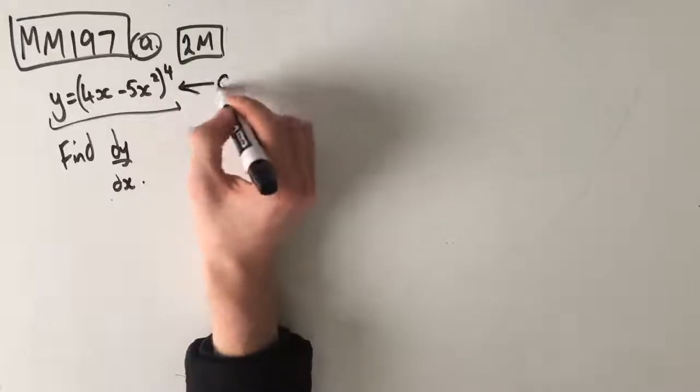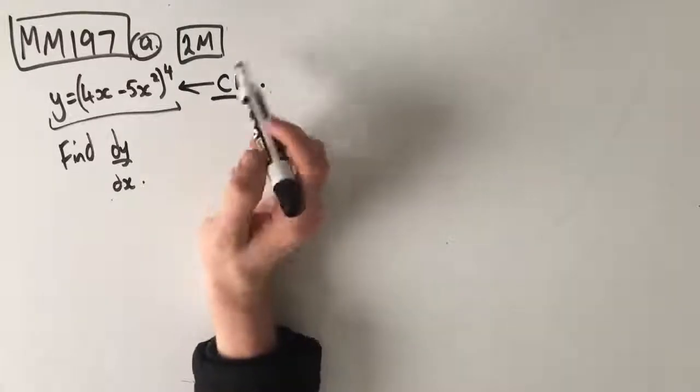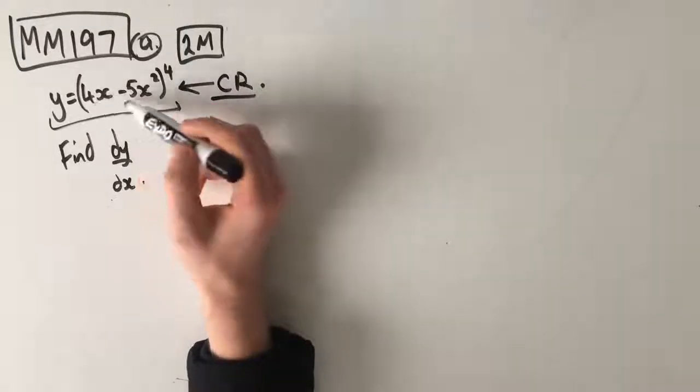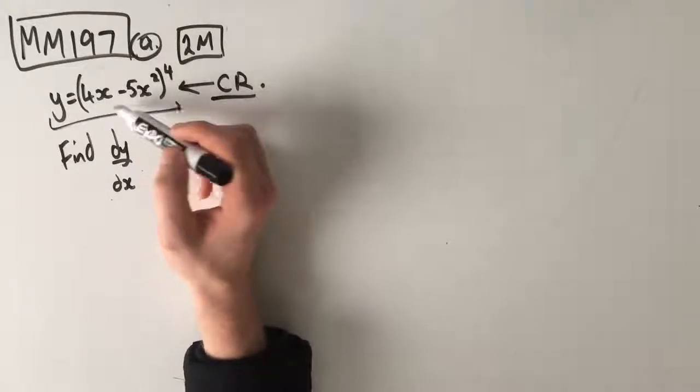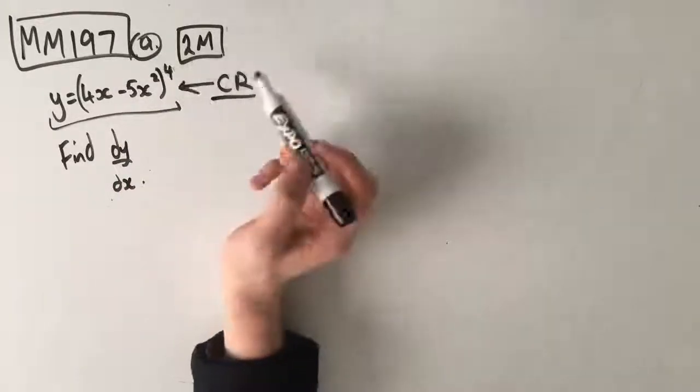We're going to use the chain rule, because we have a function, 4x take 5x squared, inside another function which is to the power of 4.